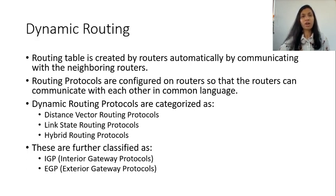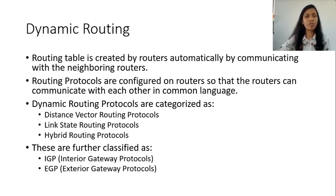Next, we have link state routing protocol. In case of link state routing protocol, each and every router sends information about its links to all the routers present in the topology. Each router then receives information about the links of every other router, and hence each router can create a topology map of the entire network. The routers use the topology table they have created and apply a shortest path first algorithm like Dijkstra's algorithm on the topology table in order to create their own routing tables.